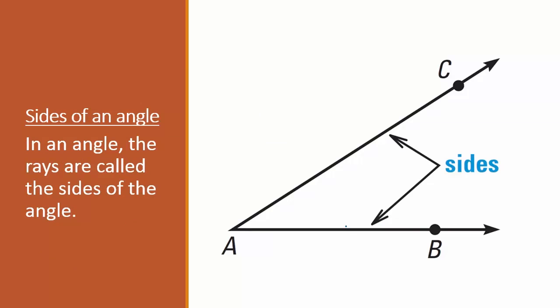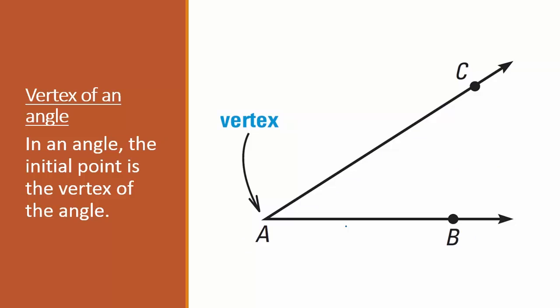Sides of an angle. In an angle the rays are called the sides of an angle. Vertex of an angle. In an angle the initial point is the vertex of the angle. In this case over here, this point right here, that's our initial point, that's where the two rays meet. It is called the vertex of an angle.